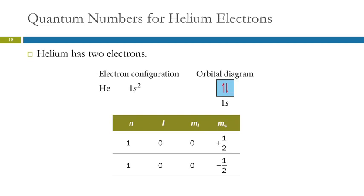Helium has two electrons, so its electron configuration is 1s2, because both electrons can be in the 1s orbital. In the orbital diagram, we show one box for the 1s orbital with one electron pointing up and one pointing down, because they must have opposite spins. Both electrons have n equals 1, l equals 0, and m-sub-l equals 0, but one has spin plus one-half and the other has spin minus one-half — so they have unique sets of four quantum numbers.